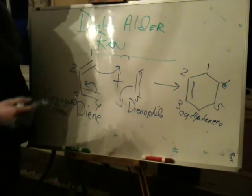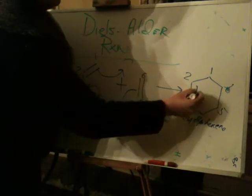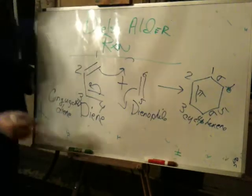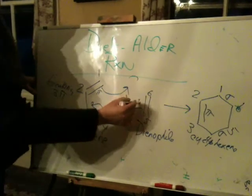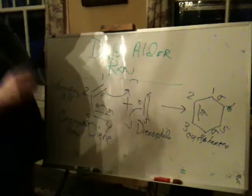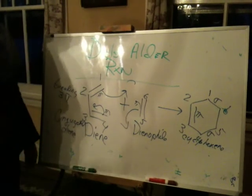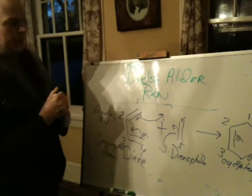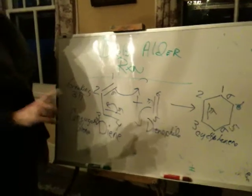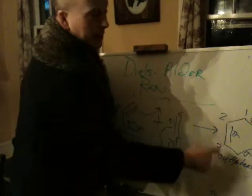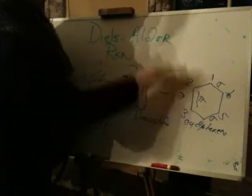There is a double bond between two and three — you are making a pi bond there, and you are making two sigma bonds. But notice in this process you are breaking three pi bonds: this pi bond, this pi bond, and this pi bond. This might remind you a little bit of the epoxide formation I showed you the other day. We are making one pi and two sigmas. Sigmas are stronger than pi bonds, so this is considered to be energetically favorable. The result is a six-membered ring with a sigma bond between one and six, a sigma bond between four and five, and a pi bond between two and three.